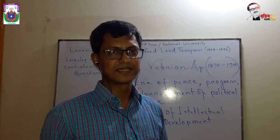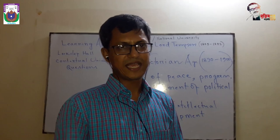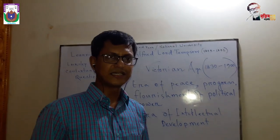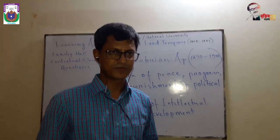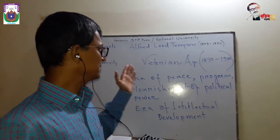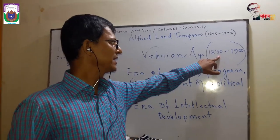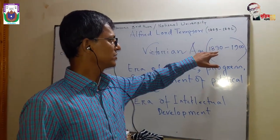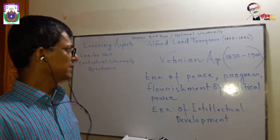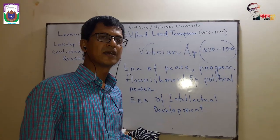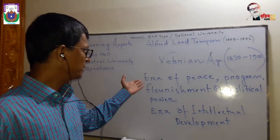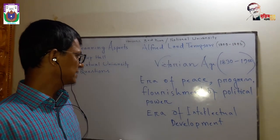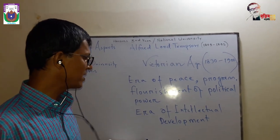Tennyson is widely known as a literary historian; in his poetry he reflected his age accurately and aptly. If you read his poetry you will easily be able to peep through the Victorian period. The Victorian Age began in 1830 and continued till 1900, covering almost 70 years. It was a period of peace, progress, and political development, and also an era of intellectual development.